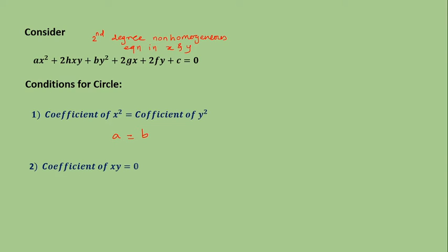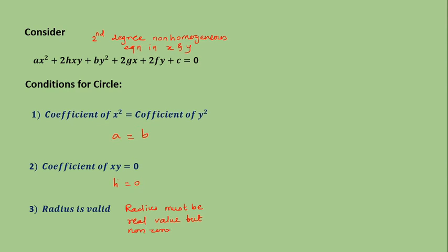The second condition is that the coefficient of xy should be 0. The coefficient of xy is 2h, so h must equal 0. The third condition is that the radius must be valid — meaning the radius, given by root of g square plus f square minus c, must be a real and non-zero value. If the radius is 0, it will not represent a circle; it will represent a point, which may be called a point circle.